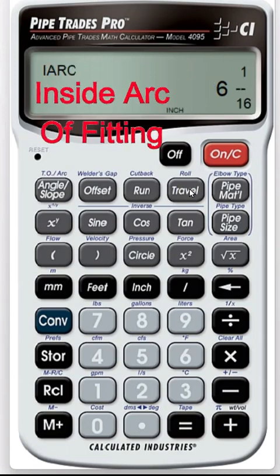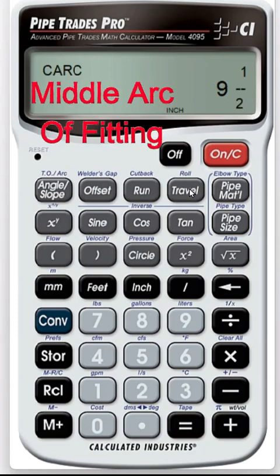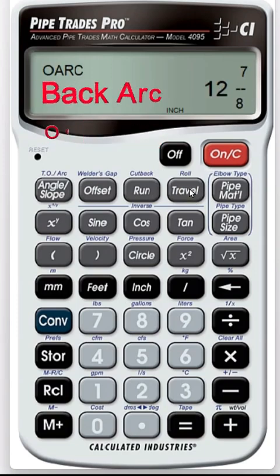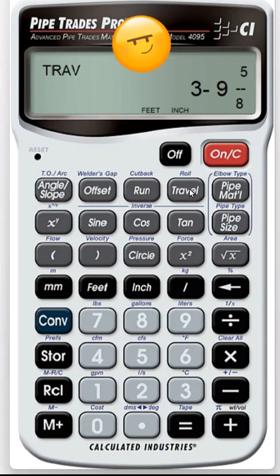Toggling it again. That's your inside arc. If you were to cut that fitting, that's your center arc, and that's your back arc. Okay, so press it, and the confirmation of 3 foot 9 and 5 eighths.